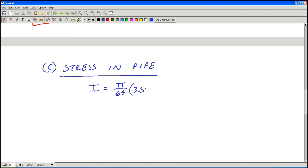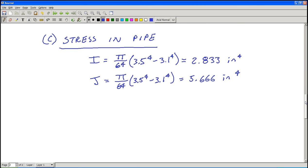So since it is hollow we'll take the outer diameter to the fourth minus the inner diameter to the fourth for a value of 2.833 inches to the fourth. And the polar moment comes out to double that, 5.666 inches to the fourth. Now we know there's a weld there that's going to probably produce some static stress concentration. But we know nothing about it to include that effect. So for this analysis it's going to be neglected. But we're going to ignore that for now.